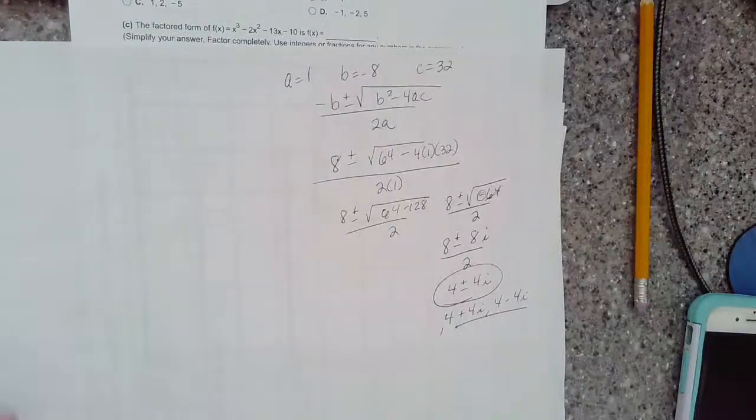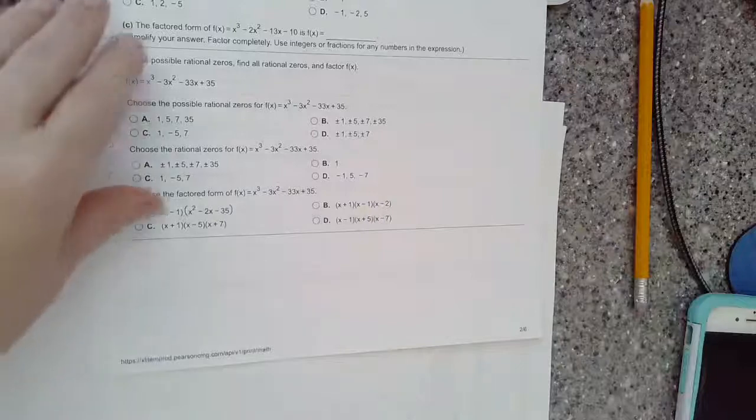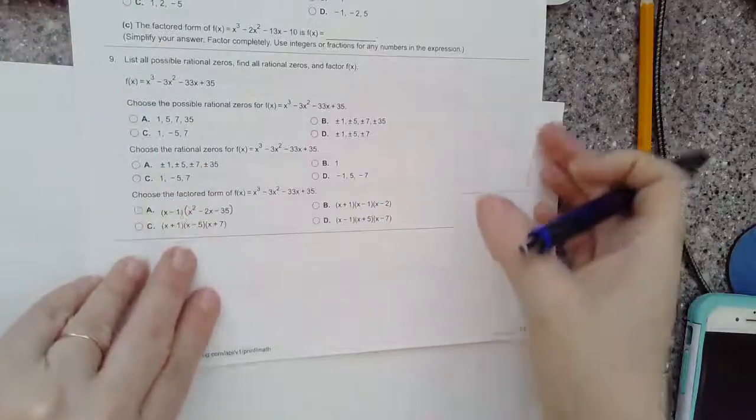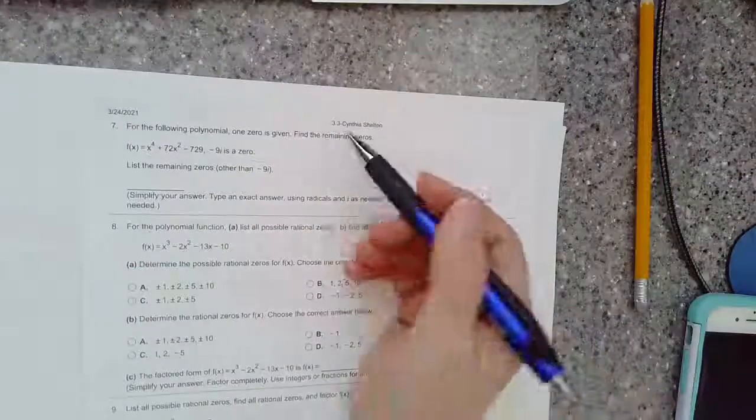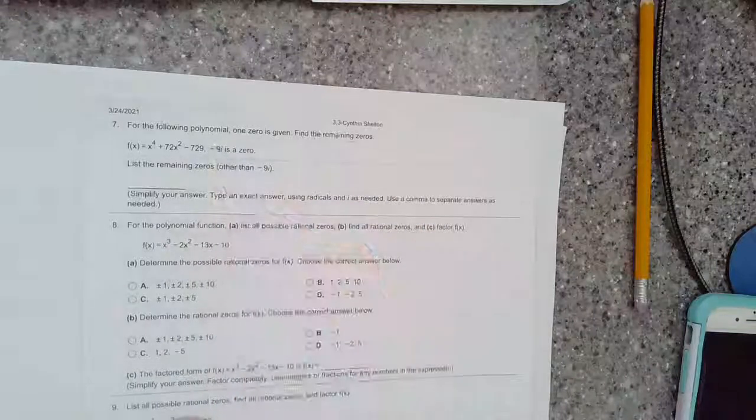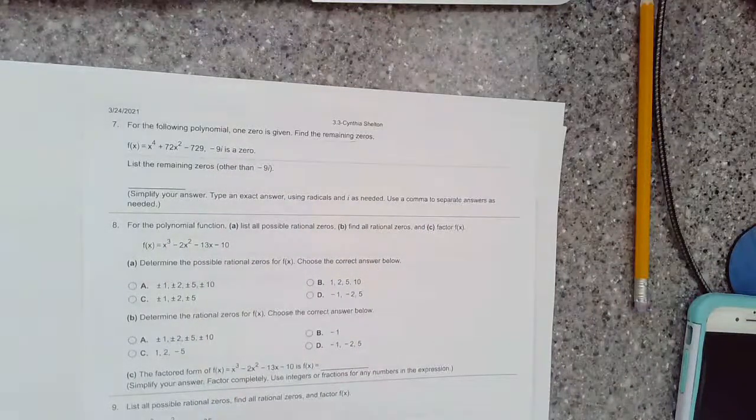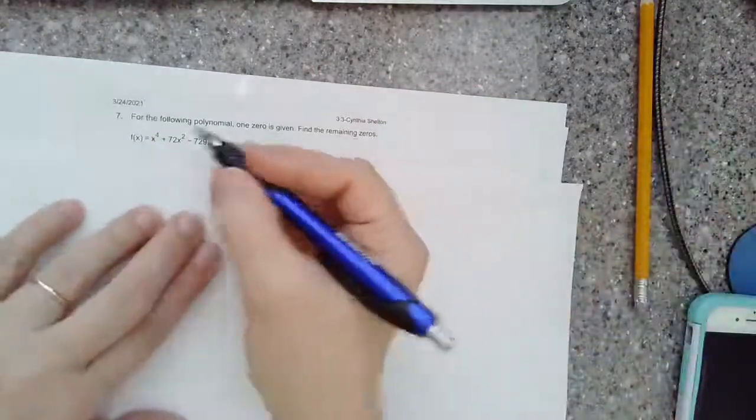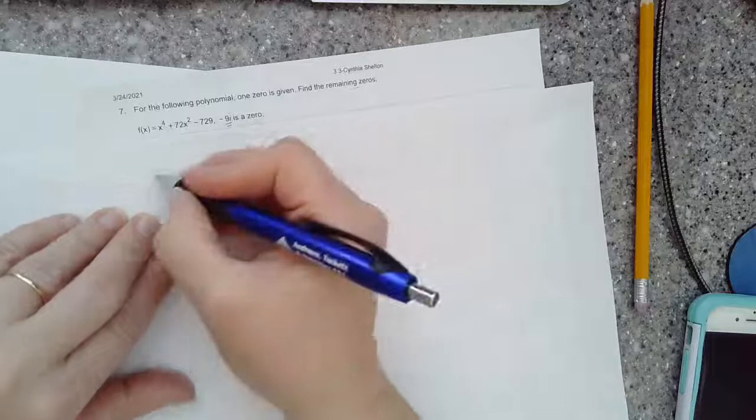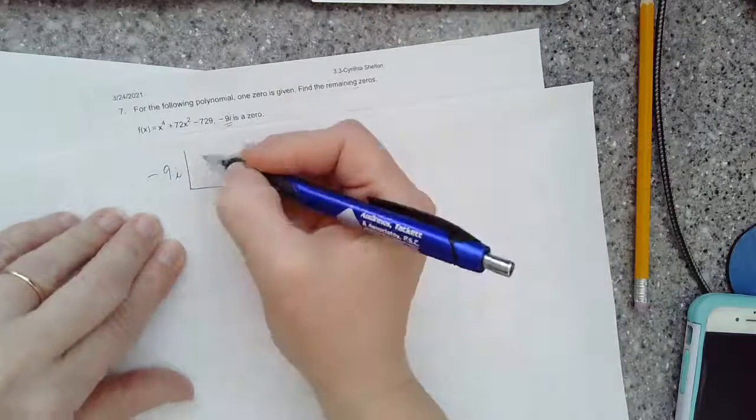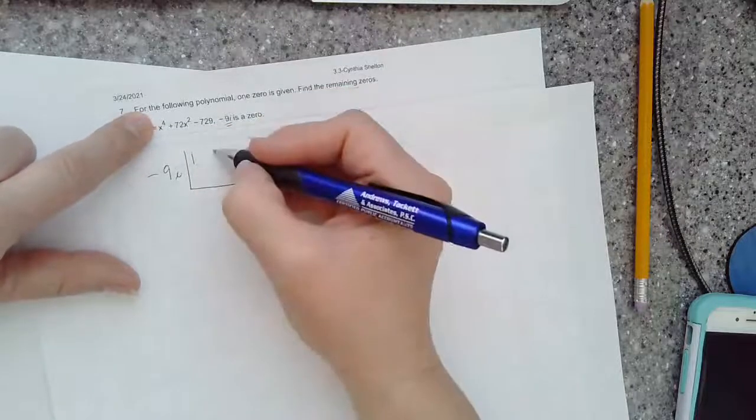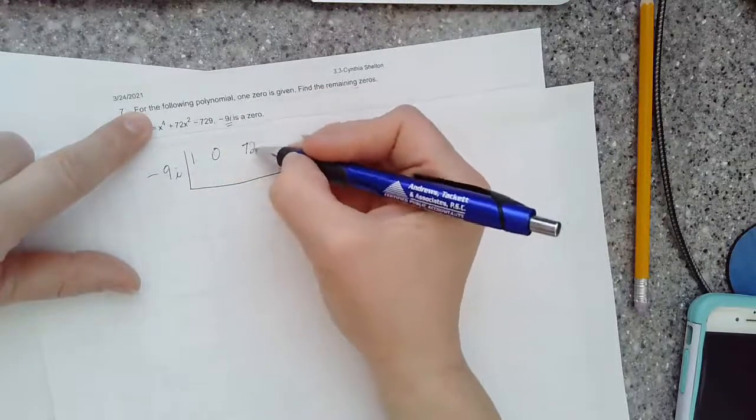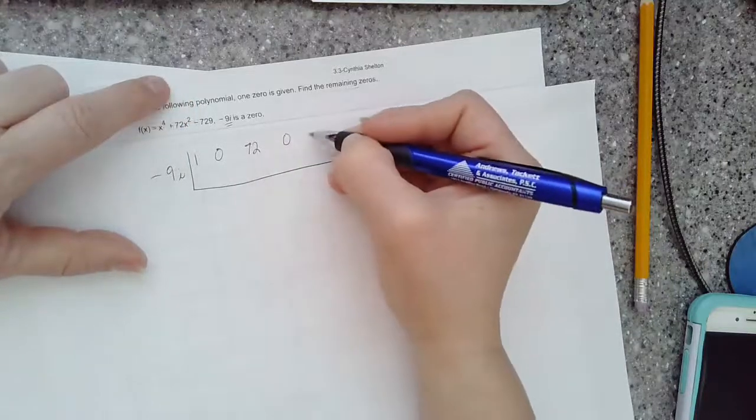Next up, number 7. Same question. For the polynomial, one zero is given, find the remaining. This one is going to take a lot of paper. We've got a fourth degree, so we're looking for a total of four zeros to account for. Negative 9i is given as a zero that works. This one has skipped x to the third spot, so I put a zero. Then we have x squared. It's skipping x, regular x, so zero, and then the constant negative 29. Make sure you've got all your terms accounted for.